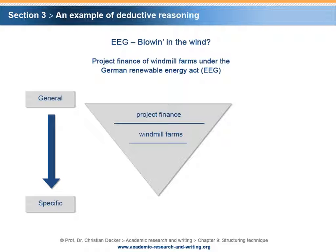The third major component could be the Renewable Energy Act — it is the most specific component because it is a specific law which is only applicable in one specific country. After we have identified the major components and their respective levels of specificity, we have reached the point where we can define a research question. Remember, beforehand we need an interpretation of the topic as explained in the chapter Interpretation of the Topic.